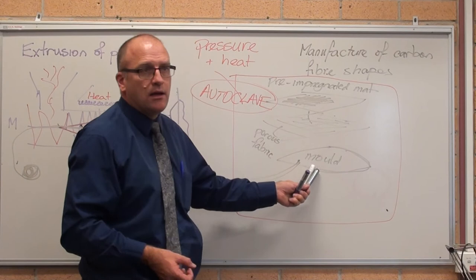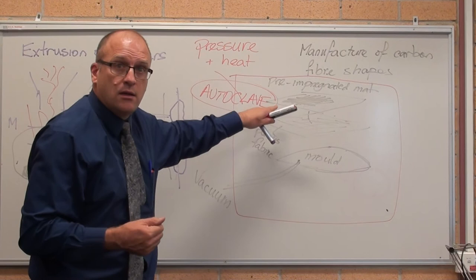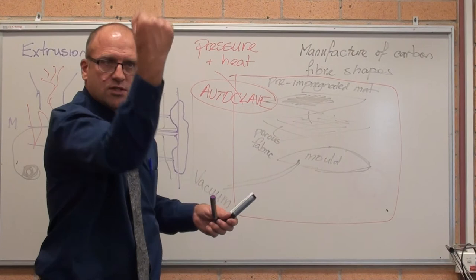The pressure pushes that mat down here onto the mold and then the vacuum sucks it out so it holds the carbon fiber into the shape that you want it. The heat sets off the chemical reaction. So you suck it into place.